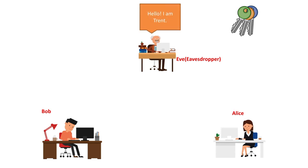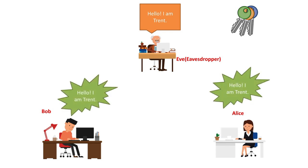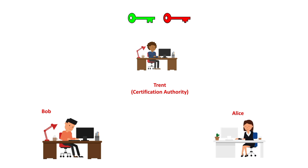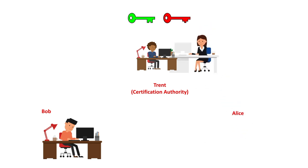Eve might try to pretend she is Trent, but Alice should make sure she really has Trent's public key. Trent could be a government agency or notary public, so Alice can visit Trent and take a copy of his public key. She only has to do this once and then she can securely communicate with everyone else who visited Trent and had him make a certificate. So in this lecture, we have discussed information security management principles and various security mechanisms. Thank you very much.